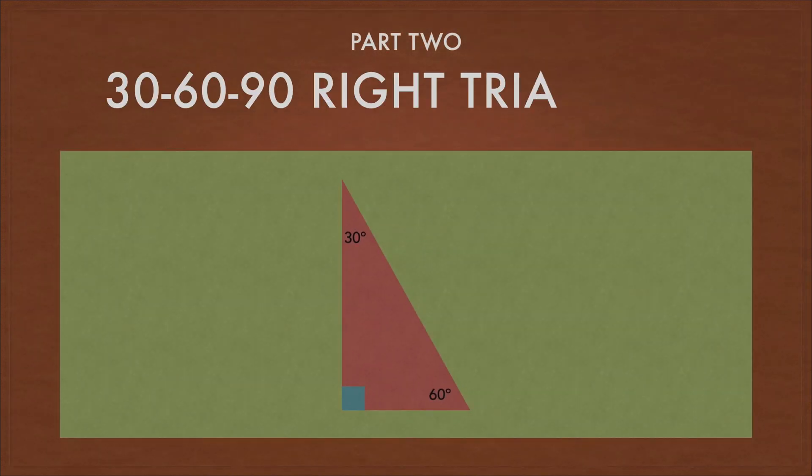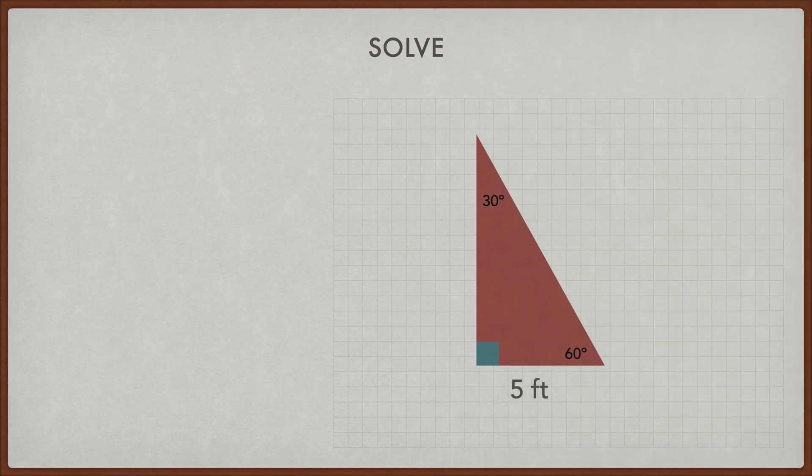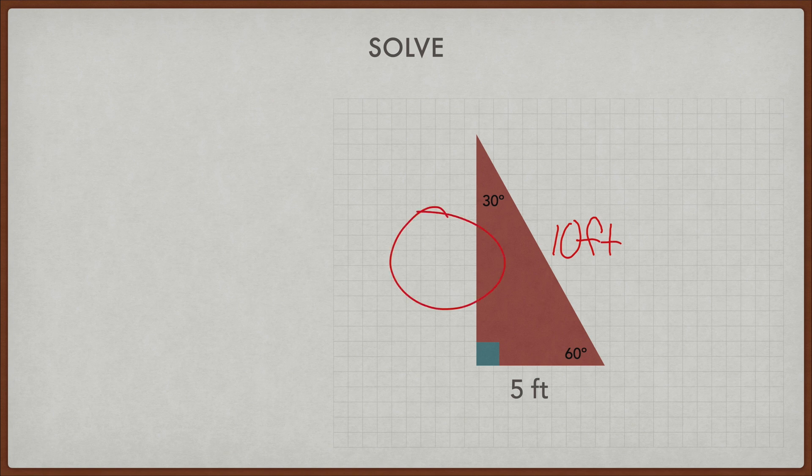Part two, the 30, 60, 90 right triangle. So let's try solving this one right here. So we know that the base is five, and as I just said, if we multiply by two, we're going to get that that means that our hypotenuse is double that, or 10. So we have a 10 foot hypotenuse. Now we need to find this section right here, which I'm going to call b for our purposes.